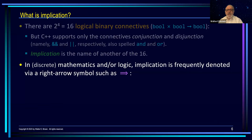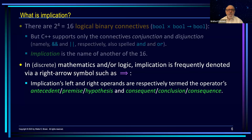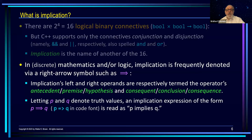In mathematics and logic, Implication is often denoted with a right-pointing double arrow, and there is often specific nomenclature for the left and right operands. Most of the time, the left operand is known as the antecedent, and the right operand is known as the consequent. So if P and Q are denoting truth values, then when you write an implication expression of the form P arrow Q, we read that as P implies Q.